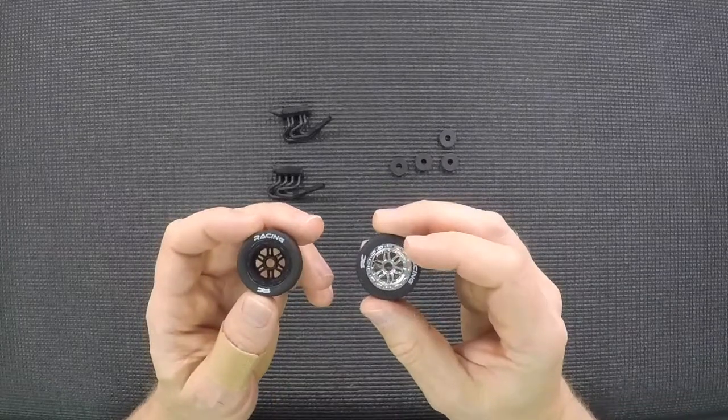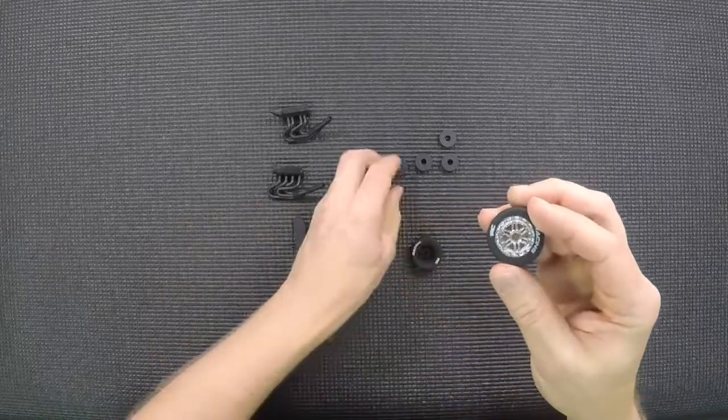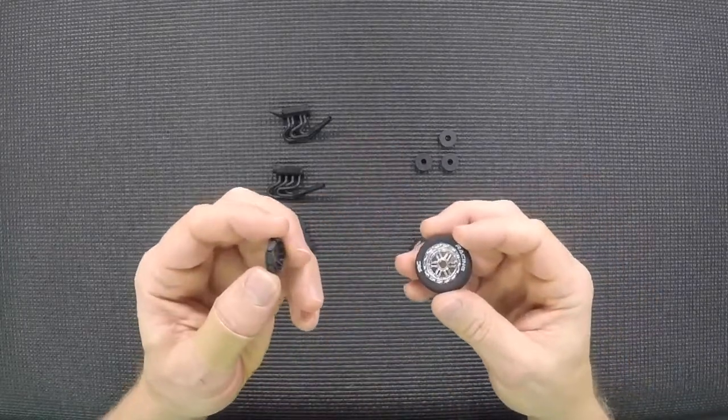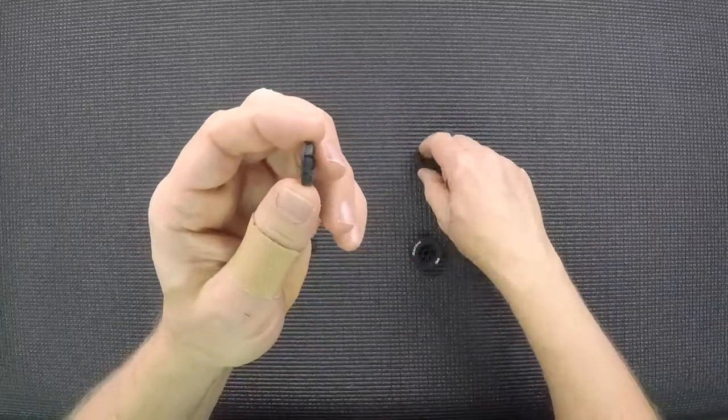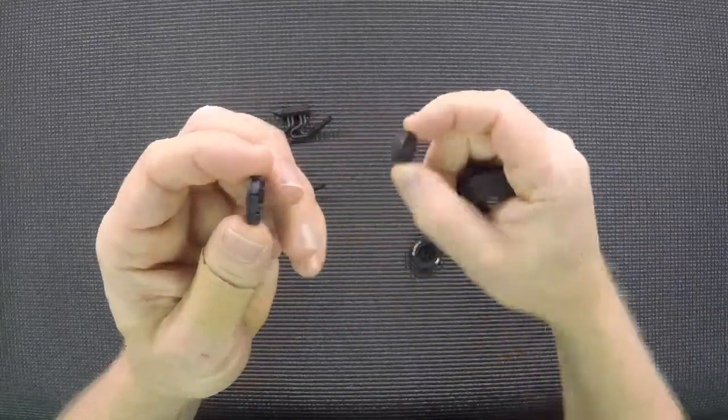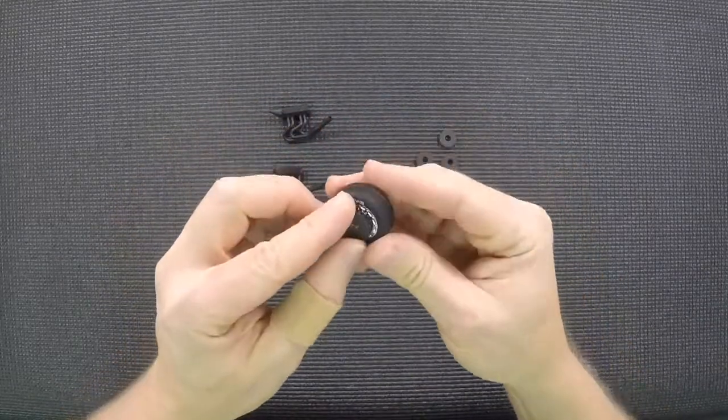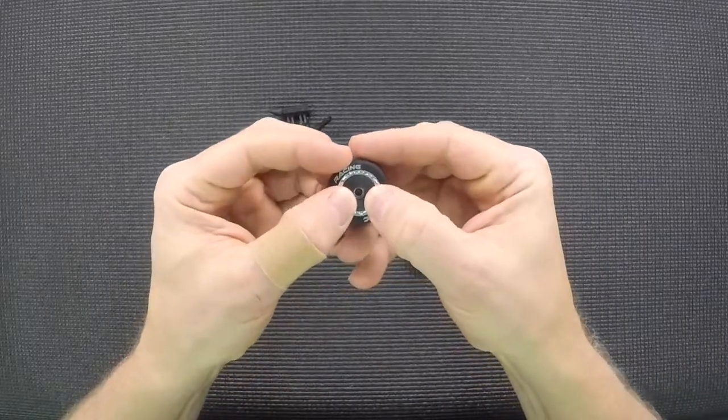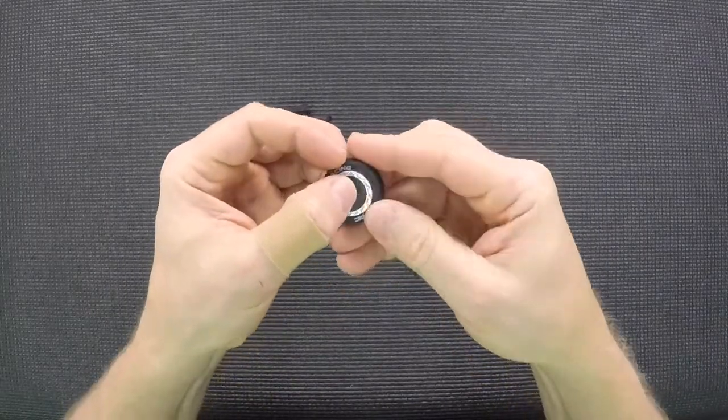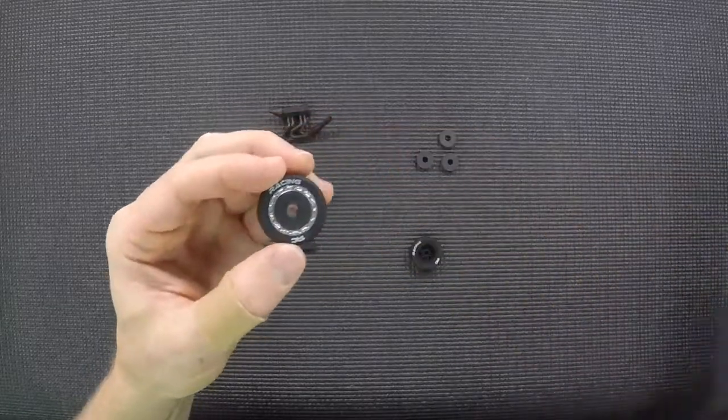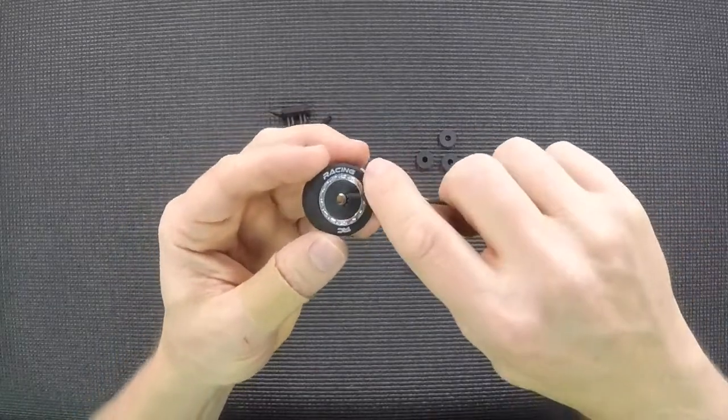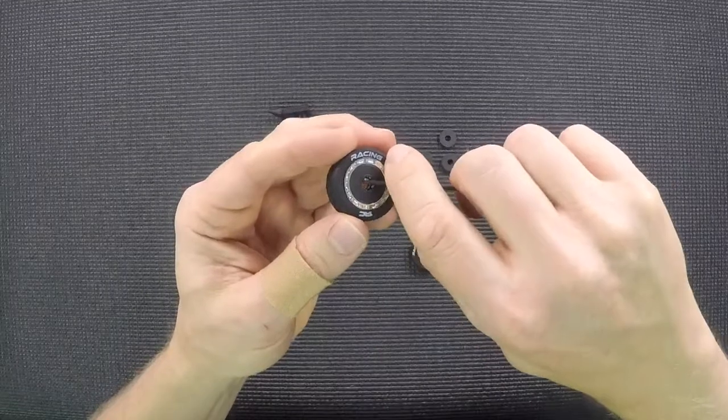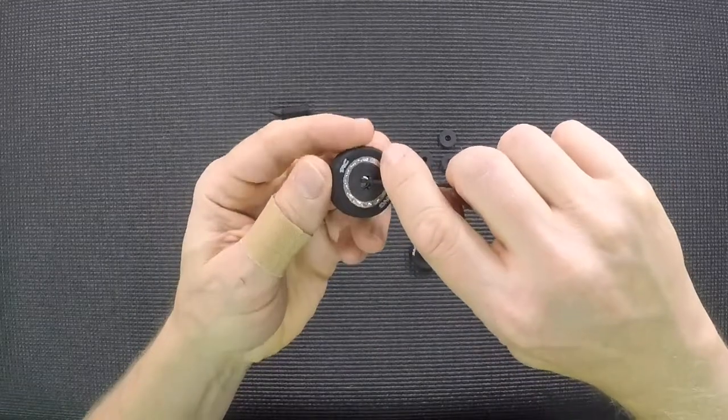One thing you're going to want to watch is when you pop the front disc in - and the front disc is the thinner one, the rear disc is thicker - you just want to get it lined up and kind of push down with both thumbs at the same time, just work it in, then push down in the center and it's there. To pop them out, just put an Allen wrench or screwdriver in there and work your way around, and they'll pop right out.